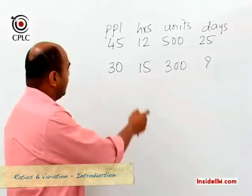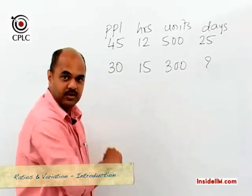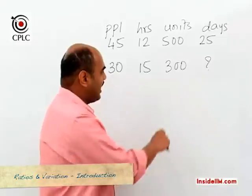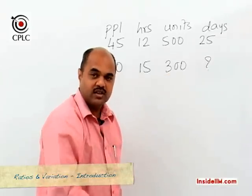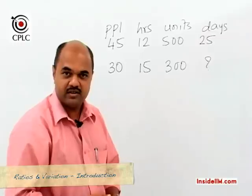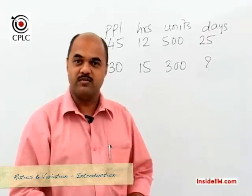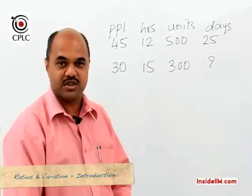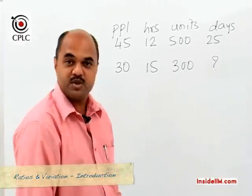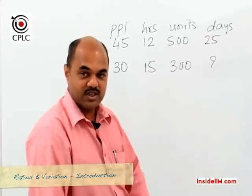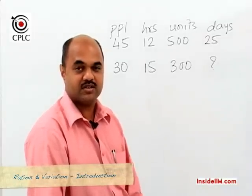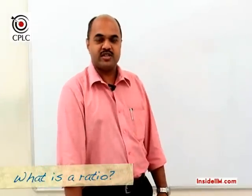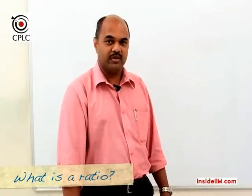The question now is: if instead of 45 people we have 30 people who are going to work for 15 hours a day and they have to produce 300 units of work, then how many days would be required? To solve such a problem we need to go through some concepts of ratios and variation, and once we do that this problem can be solved in absolutely no time. So let's move on to ratios and variation.